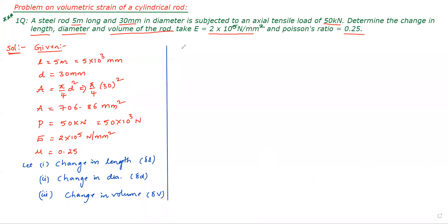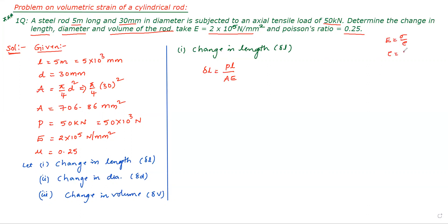First bit — calculate change in length δL. The basic equation is δL = PL / (AE). This comes from Young's modulus = stress/strain, where stress = P/A, and strain = δL/L, giving δL = PL/(AE).